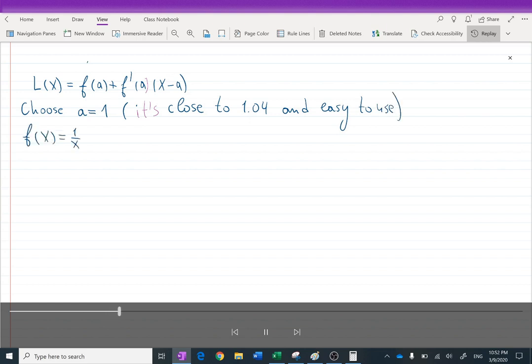Then f(a), it's 1 over x, so it's 1 over 1, which is 1. f prime of x is negative 1 over x squared, so it gives us negative 1 when we plug 1.